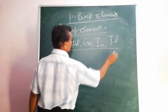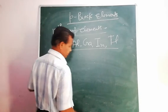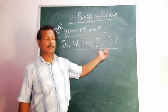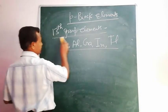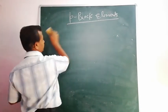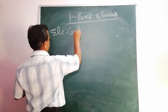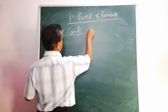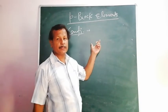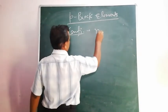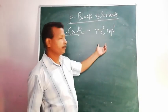These five elements are kept together in the thirteenth group because they share many properties, such as electronic configuration. In general, all these elements have an ns², np¹ type electronic configuration.